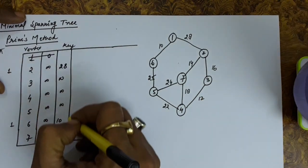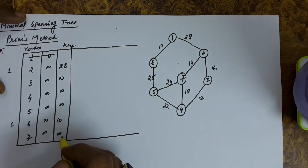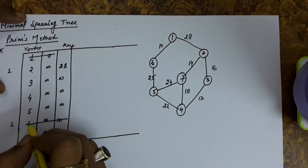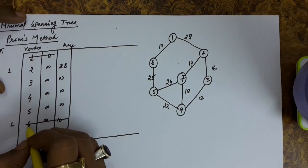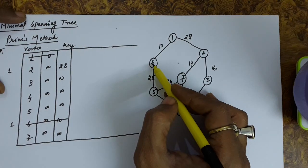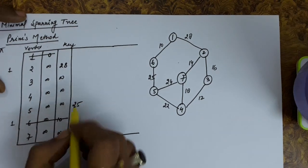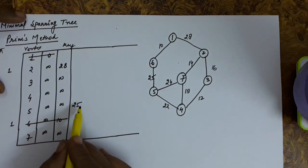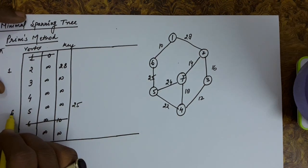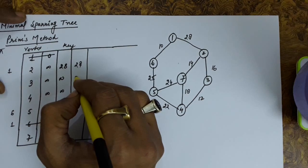We again delete the vertex with the minimum key value. The remaining key values are 28, infinite, infinite, infinite, 10, and infinite — so 10 is the smallest, which is vertex 6. From vertex 6 we check connections: 1 has already been deleted. From 6 to 5, the edge cost is 25, so we update the key value of 5 as 25. The predecessor of 5 is set as 6, and the rest remain the same.